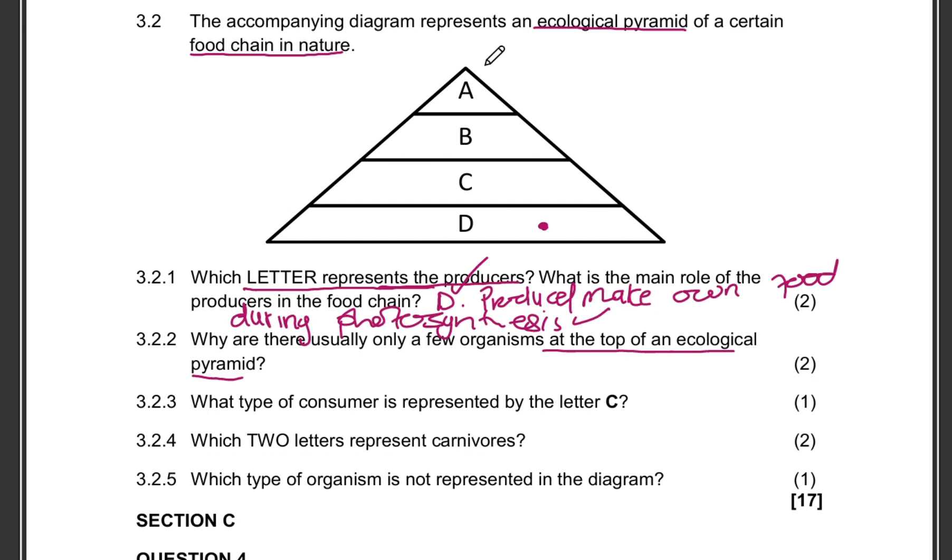The reason for that is that the organisms in each level, or yes in each trophic level, use up most of the energy for their own life processes. So then you end up having the consumers at the top of the food chain having much less energy that is available to them, and only a few consumers can be supported because of that.